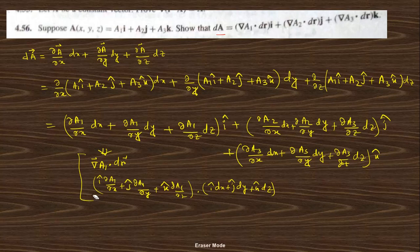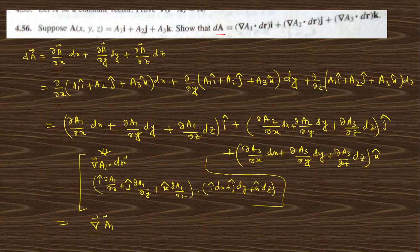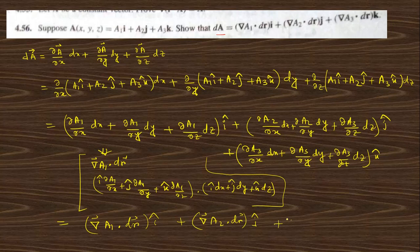Therefore dA = [grad(a₁)·dr]·i-cap + [grad(a₂)·dr]·j-cap + [grad(a₃)·dr]·k-cap. This is the solution of problem 4.56.